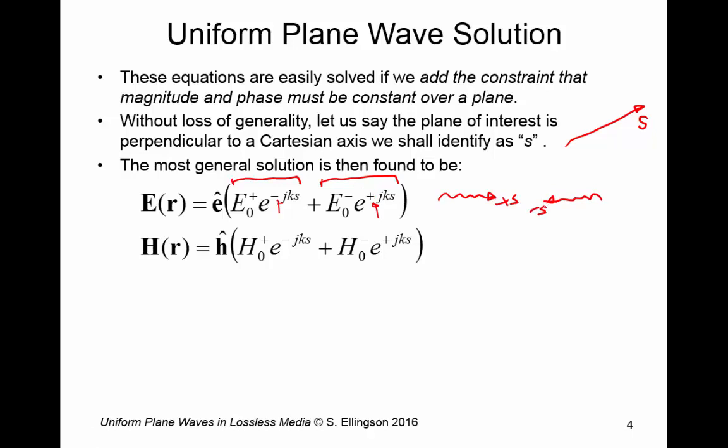So these are waves traveling both forward and backward. These coefficients E naught with either a plus or minus sign as a superscript are simply complex coefficients, complex valued coefficients. And out front here we have these unit vectors. Now so far we have no basis for which to determine what these unit vectors are. We simply know that they must be oriented in some direction in space.